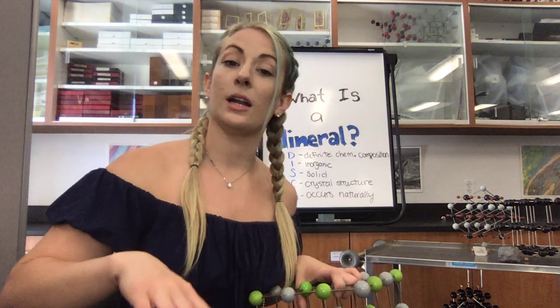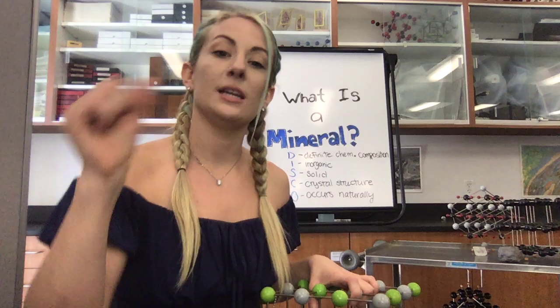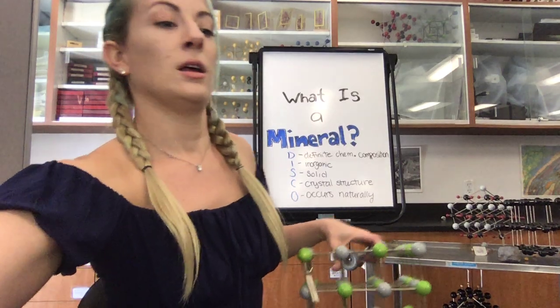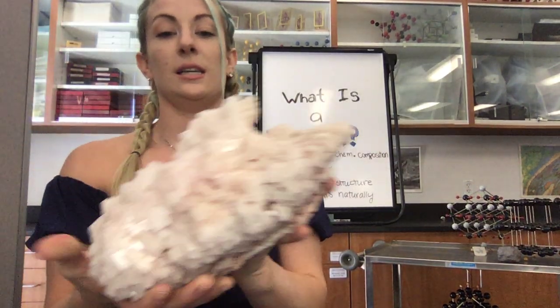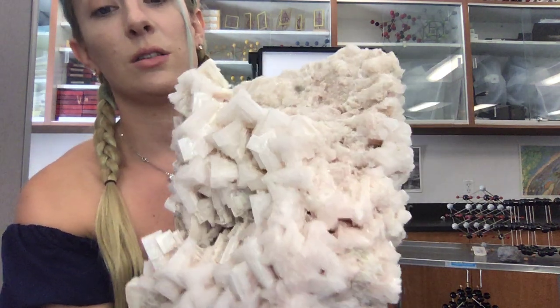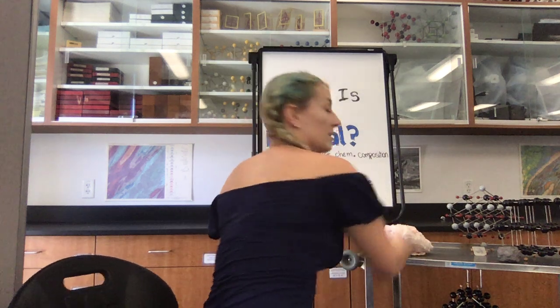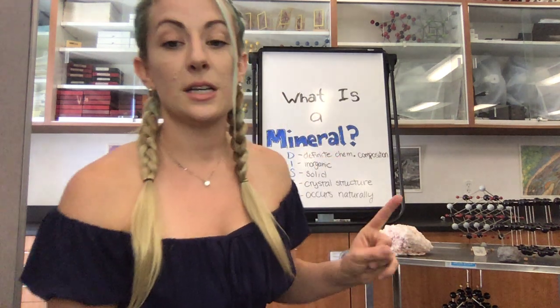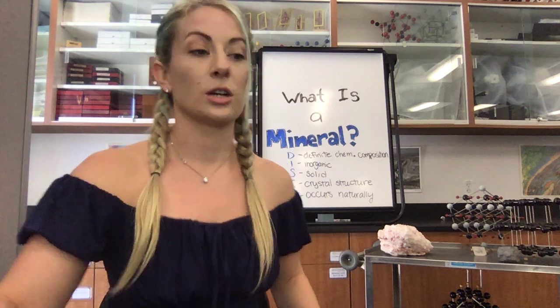If you were to take table salt at home and put it underneath a microscope or zoom in with a high-powered camera, you would see it's a bunch of little cubes. The crystal structure can also be seen in the lake specimen — see all the little squares of salt in there. A definite chemical composition and solid state leads to a known crystal structure.